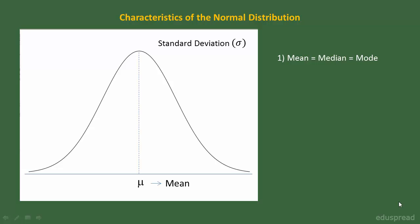After having a look at normal distribution and its probability density function, let's discuss some characteristics of the normal distribution. By having a look at this figure, we can see that the highest point on the normal curve is at the mean. In case of normal distribution, we have mean is equal to median is equal to mode.